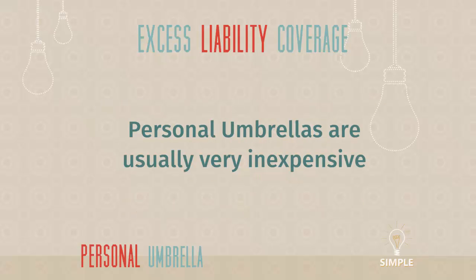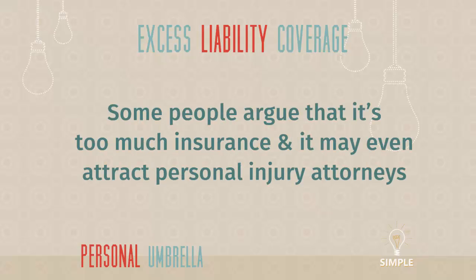Personal umbrellas are usually really inexpensive. They almost always give you a discount on your homeowners policy when packaged together. A common amount for a one-million-dollar personal umbrella is around $120 a year — about ten bucks a month. If you get a $40 discount on your homeowners premium, you're talking about $80 or $7 a month for a million extra dollars of liability coverage over the top of your home and auto policy. Personal umbrellas are very, very inexpensive — another great reason to get one.